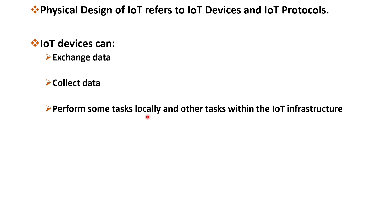Furthermore, these devices are capable of performing certain tasks locally, while others are executed within the IoT infrastructure. The distribution of tasks is determined by factors such as memory constraints, processing capabilities, communication latencies and speeds, and meeting deadlines based on temporal and spatial considerations.